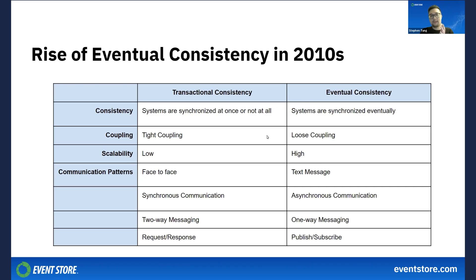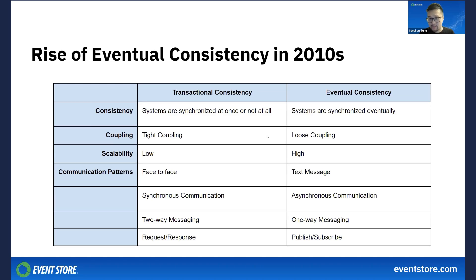To understand the difference between transactional and eventual consistency, we can compare similar communication patterns. Face-to-face communication, like in a meeting, can be compared to transactional consistency where instant responses are required by multiple parties. Text messaging, on the other hand, is like eventual consistency because it doesn't need an immediate response from everybody and it's more hassle-free. Another way to describe this is that transactional consistency is synchronous or two-way communication, whereas eventual consistency is more like asynchronous, one-way communication.